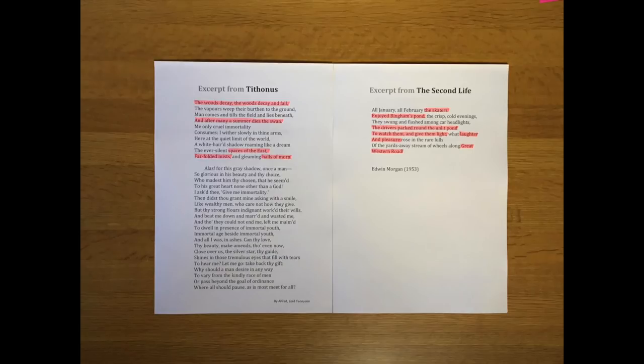And when he talks about the road that's just yards away from Bingham's pond, here he names it as Great Western Road, which is different from Winter. So those are things just to be aware of in the background of Winter, just to help you get a feeling for why Morgan is writing the way he is and perhaps feeling the way he is.